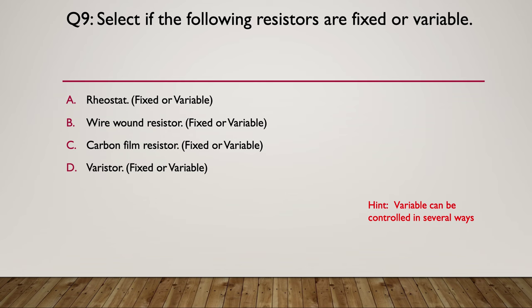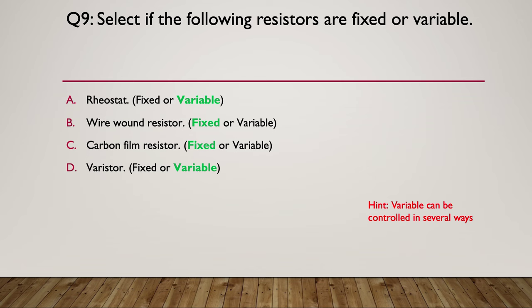Variable can mean physically variable or electronically variable — it doesn't have to be mechanically adjusted. A rheostat is variable — mechanically variable, normally with a handle or knob. A wire wound resistor is a fixed resistance. A carbon film resistor is also a fixed value. A varistor changes its resistance with voltage — it's variable, a voltage-controlled resistor that goes to low resistance at high voltages.